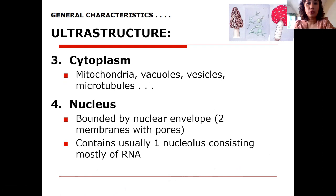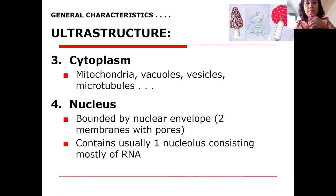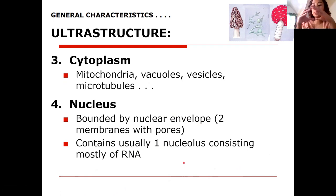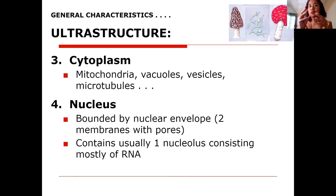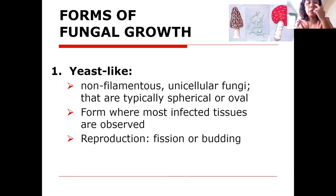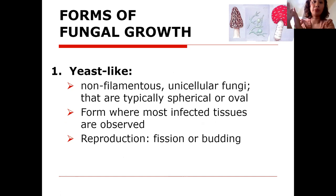For the cytoplasm, fungi have mitochondria, vacuoles, vesicles, and microtubules. The nucleus is bounded by a nuclear envelope, meaning fungi have a true nucleus with a double nuclear membrane. There is usually one nucleus, consisting mostly of mRNA. The dense part inside the nucleus is the nucleolus, where RNA is formed. The forms of fungal growth are yeast-like, mold-like, and dimorphic.